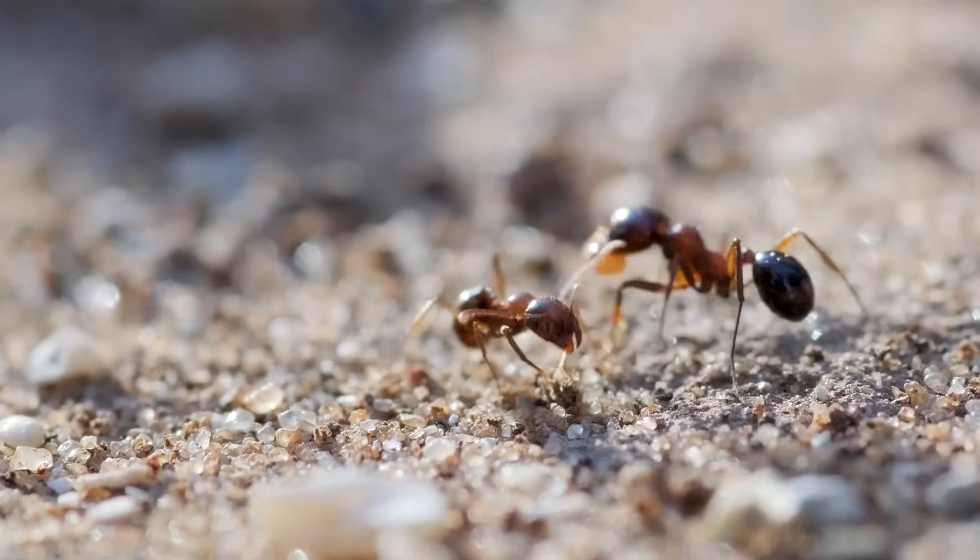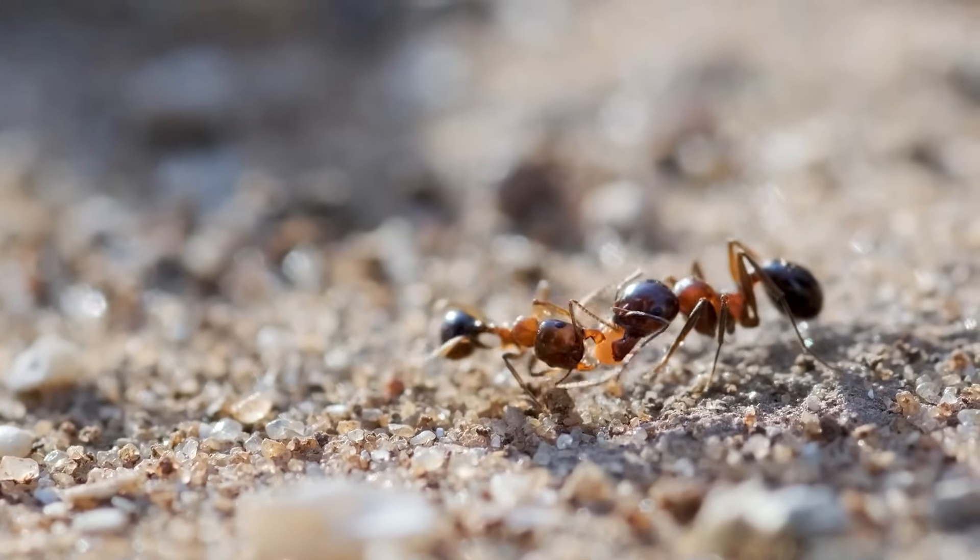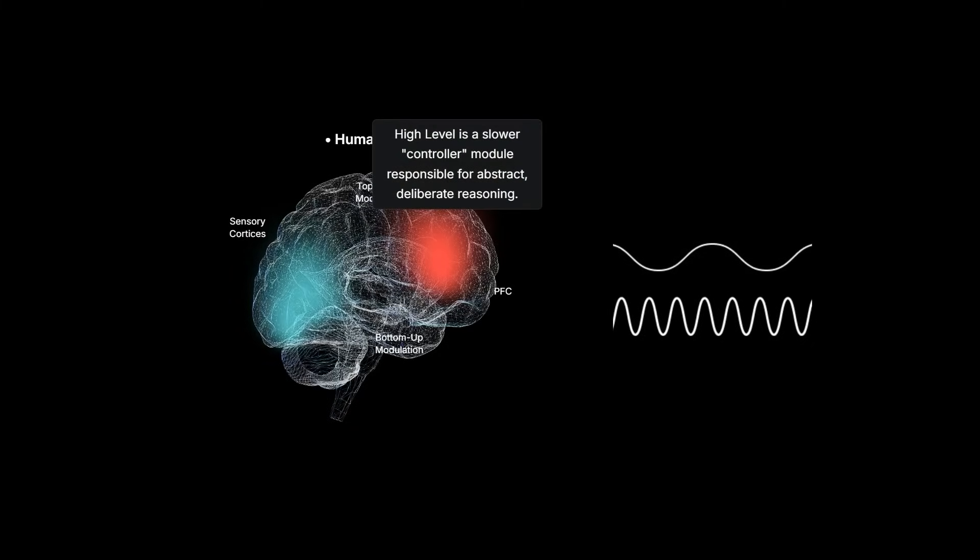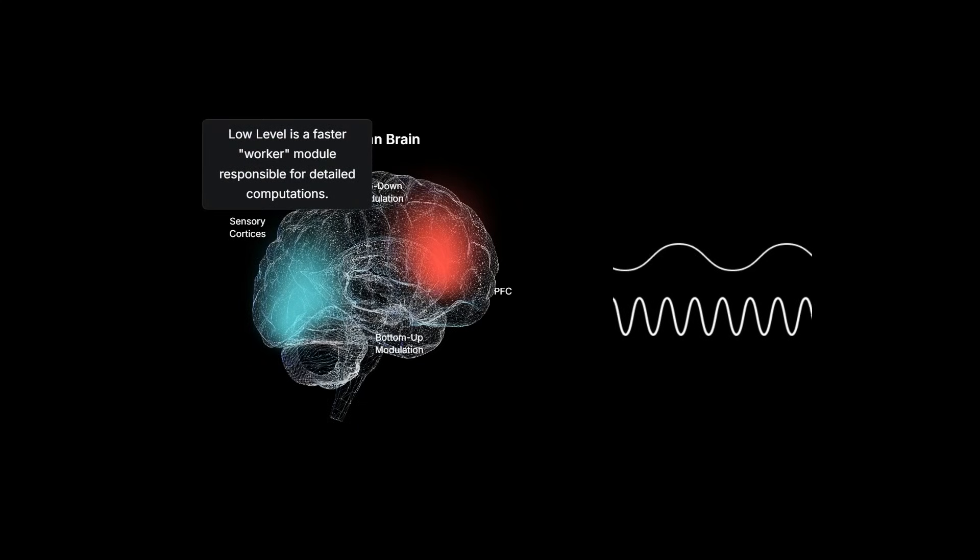But even an insect is able to self-sustain in the brutal, complex, and dynamic world with its tiny brain. HRM argues that for complex multi-step reasoning, what you need is not just a bigger brain, but a better organized one. This is where its genius lies. It organizes computational brain like a small, highly effective company with just two employees.